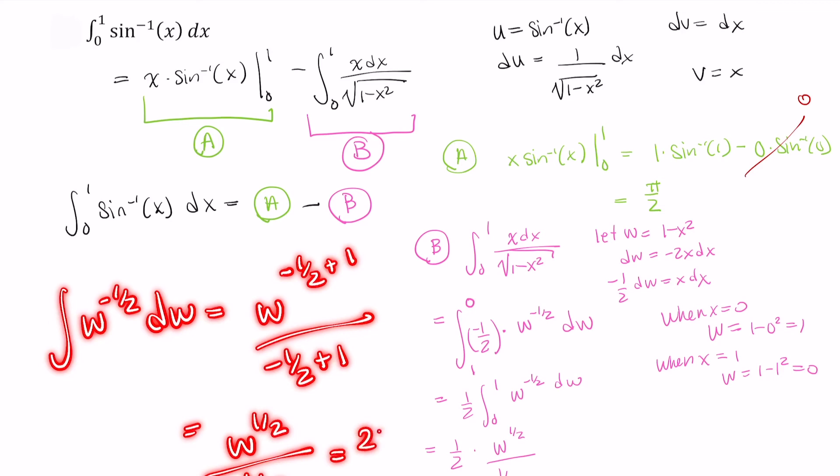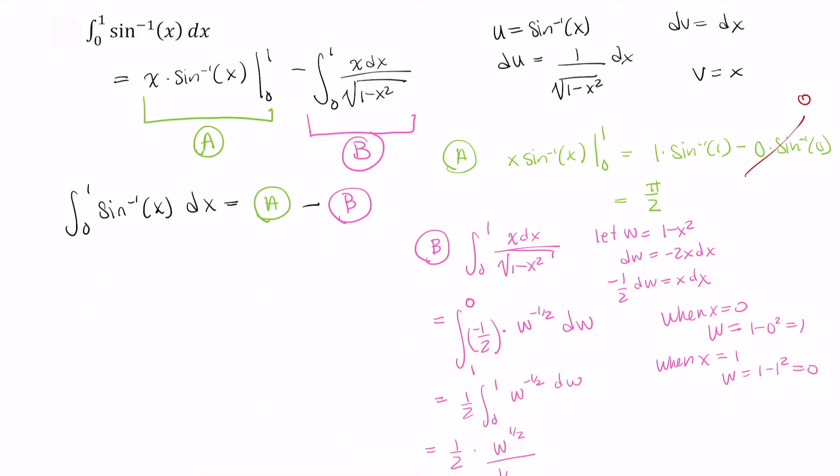You could also write this as 2w to the 1 half, and actually I should have a negative in front of both of those. No matter, I'm not going to do that this time because I'm multiplying by a 1 half and dividing by a 1 half, so I know those are just going to become 1, since 1 half divided by 1 half is equal to 1.